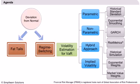Under parametric approaches, we will learn about historical standard deviation, exponential smoothing, GARCH, and risk metrics. We will also learn about the hybrid approach using exponential and market value weights. Finally, we will end the session by learning about implied volatility and the concept of mean reversion.